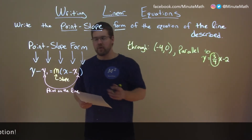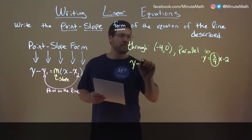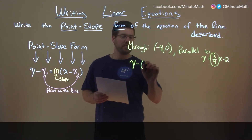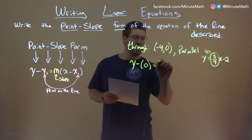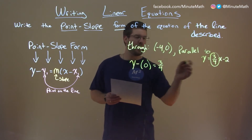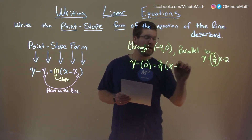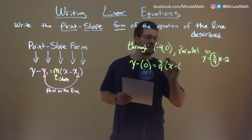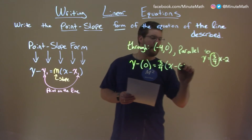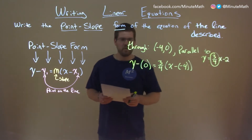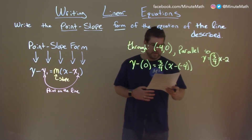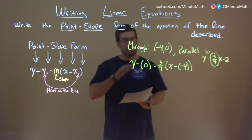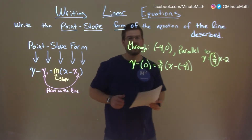Let's use our formula: y minus y1, which is 0, equals slope 3 fourths — got it right there — times x minus x1, which is negative 4. We can actually simplify this a little bit, but we've got the basics here.